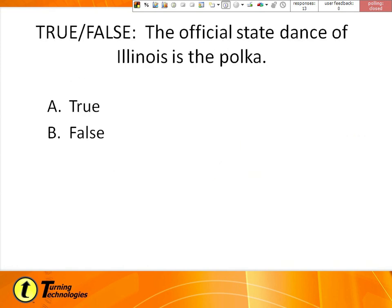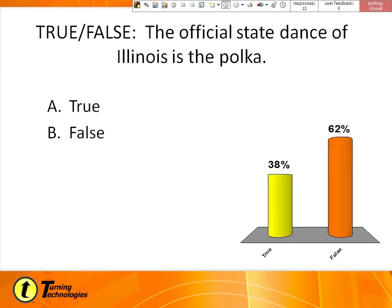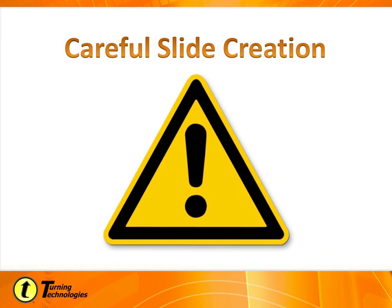True or false: the official state dance of the state of Illinois is the polka. Is that true or false? All right, 13 of us are in. 62 percent said false — that is the correct answer, it is false. The actual official dance is the square dance. I don't know if anybody knew that, but now I see some nodding of heads. So that's our quick warm up for the second session.